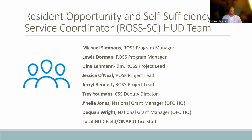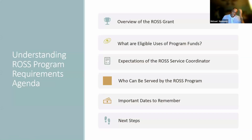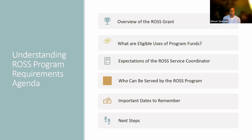We really wanted to give you a chance to meet the Ross team — these are the individuals here in the main office and we're here to support you. We are really interested in providing you with information and resources you need to run a successful Ross program. We have a pretty packed agenda. We wanted to continue to give you an overview of your Ross grant, talk about eligible funds for use, expectations of the service coordinator, who can be served, important dates to remember, and next steps.